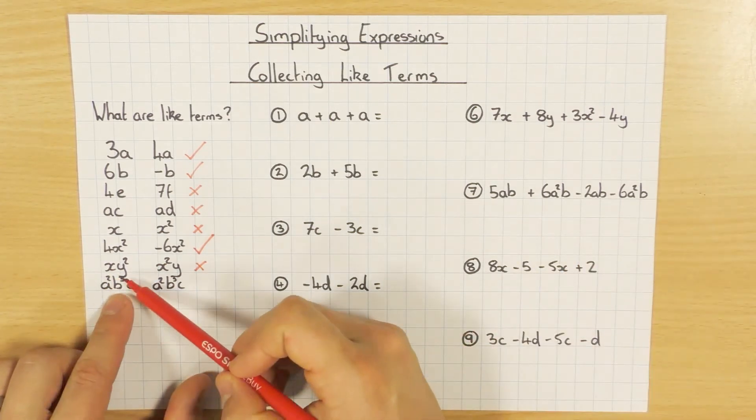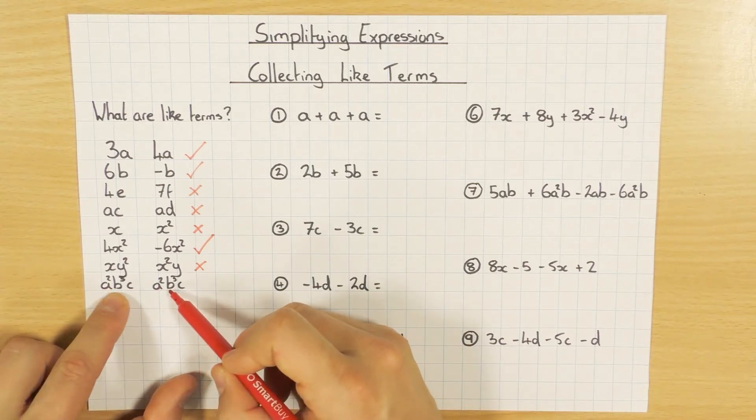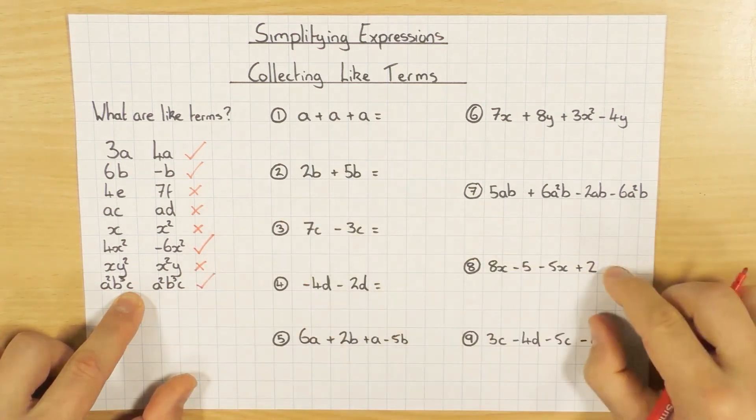And finally, I've got an A squared, B cubed, C. So we need to compare everything. A squared and A squared. That's fine. B cubed, B cubed. That's fine. C and C. So they're exactly the same. So they are like terms.